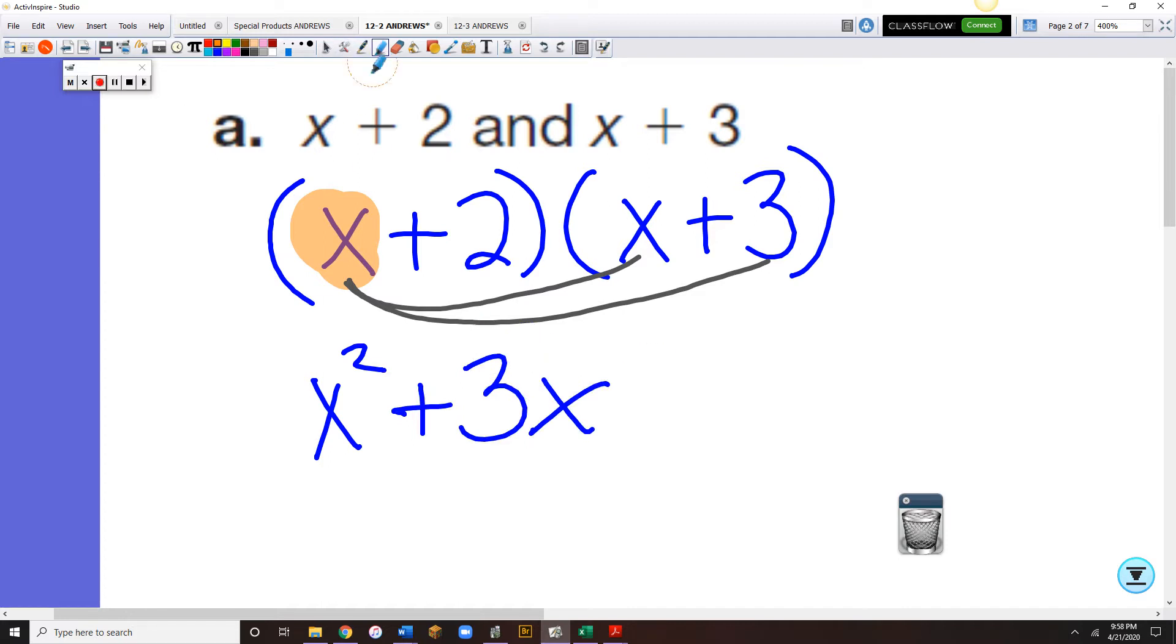Now, I'm going to pretend the x does not exist. I already dealt with the x. And I'm going to go to the plus 2. And it's very important to consider the sign that's in front of the 2, because if that was a subtraction sign, it would be a whole different sign issue. Okay, so that's going to be a 2 times the x and a 2 times the 3. So plus 2x and plus 6.